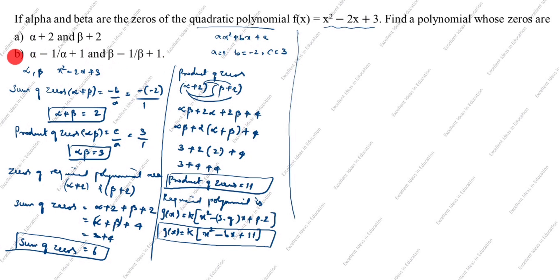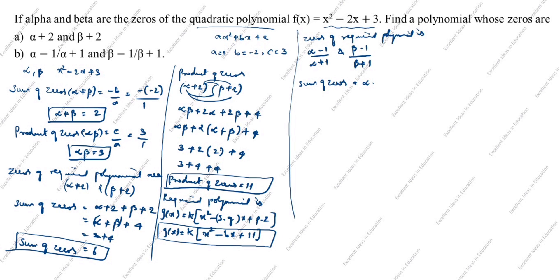Now part B. Zeros of the required polynomial are (alpha - 1)/(alpha + 1) and (beta - 1)/(beta + 1). Sum of zeros = (alpha - 1)/(alpha + 1) + (beta - 1)/(beta + 1). We cross-multiply to get a common denominator: (alpha - 1)(beta + 1) + (beta - 1)(alpha + 1), all divided by (alpha + 1)(beta + 1).